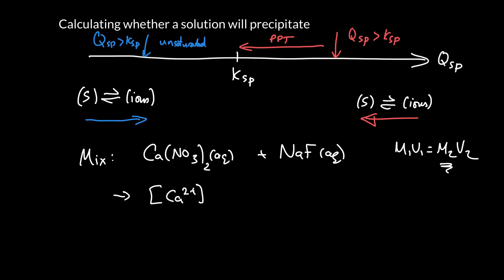And we'll mix them together. And at the end of the day, the calcium concentration will be 2.5 times 10 to the minus 3 moles per liter. And the fluoride concentration upon mixing will be 2 times 10 to the minus 3 moles per liter.